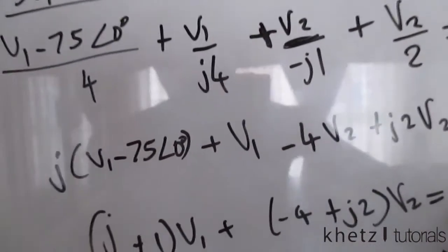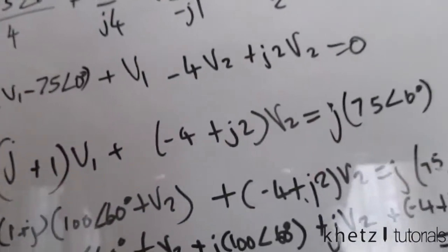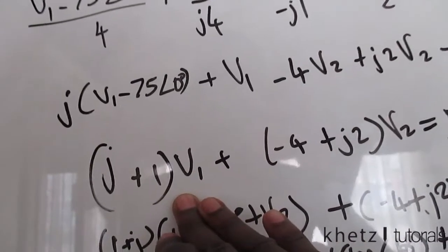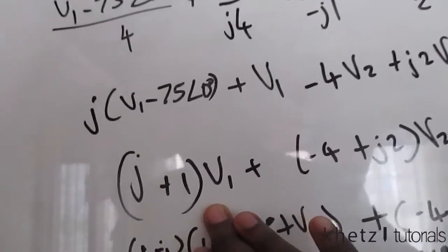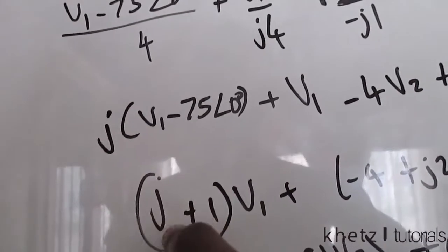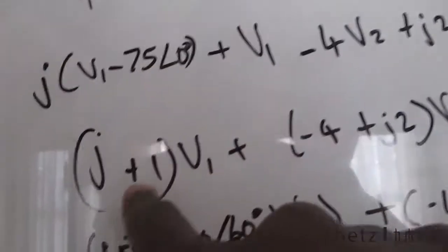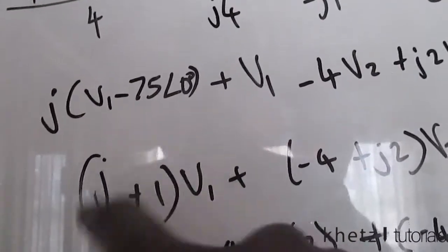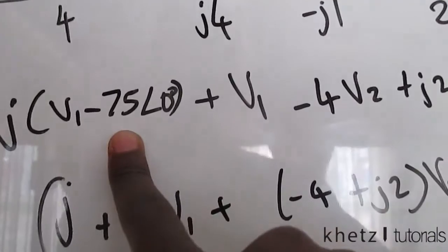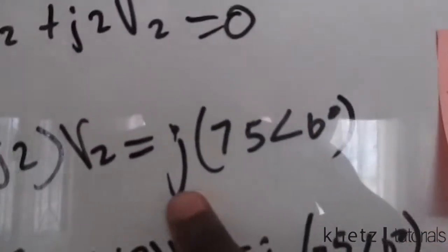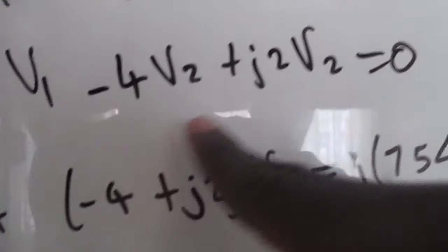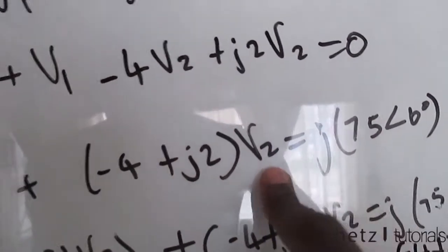After finding that equation, we group the terms by their variables. We have JV1 and 1·V1, giving us (1 + J)V1. There is also a constant term of negative J multiplied by 75; taking that to the other side gives positive J·75. Associated with V2 we have negative 4 and J2.